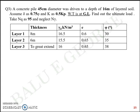Thicknesses are given as 8, 6, and to a great extent. Dry unit weight is given in kN per meter cube: 16.5, 15.5 and 16. Initial void ratio is given as 0.6, 0.65 and 0.65. Angle of internal friction is given as 30, 35 and 38 degrees.